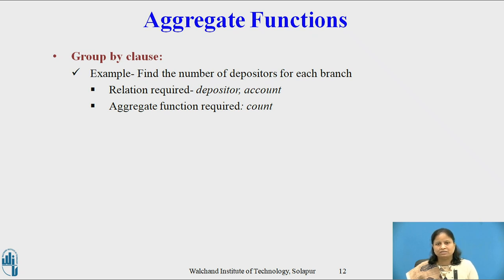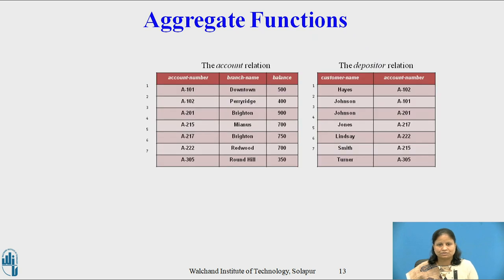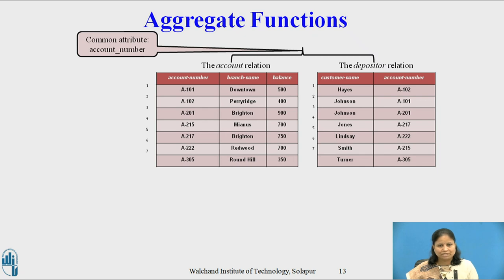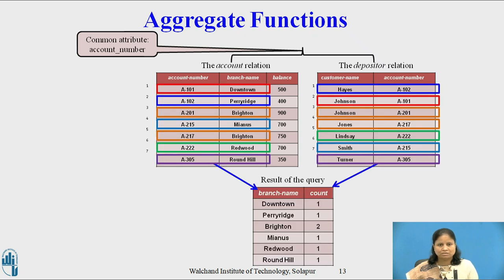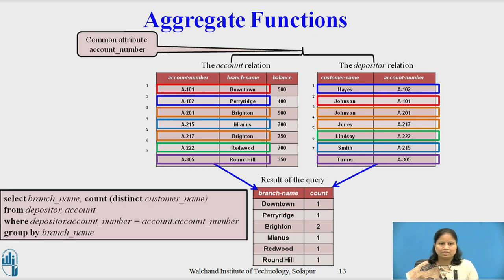Second Group By example: find the number of depositors for each branch. Two relations are required — Depositor and Account — with common attribute Account Number. We apply Count to the field Customer Name and Group By to the field Branch Name. The result is shown on the slide. The query is: SELECT branch_name, COUNT(DISTINCT customer_name) FROM depositor, account WHERE depositor.account_number = account.account_number GROUP BY branch_name.